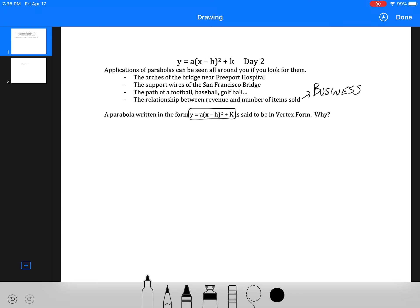So a lot of business things are based on parabolas. We use this form more often than not. It's called vertex form. The reason it's called vertex form is because it shows the vertex right in the equation, shows